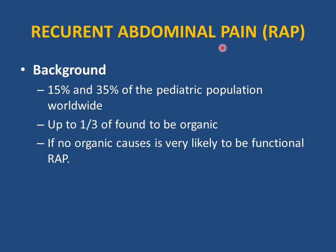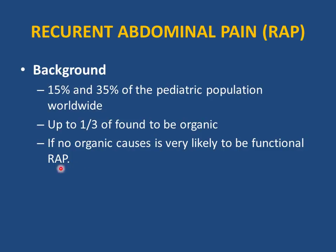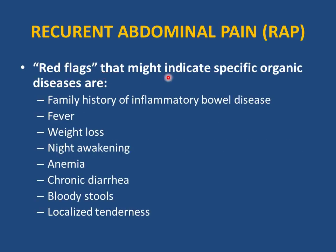Recurrent abdominal pain is one of the most common reasons to visit a pediatrician, affecting 15-35% of the pediatric population. Up to one-third of cases are organic. Red flags suggesting organic disease: family history of IBD, fever, weight loss, nocturnal pain that wakes the child, anemia, chronic diarrhea, blood in stool, and localized tenderness.